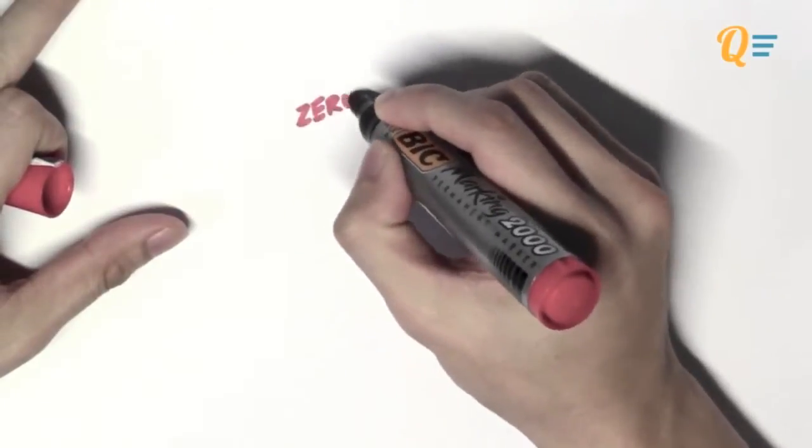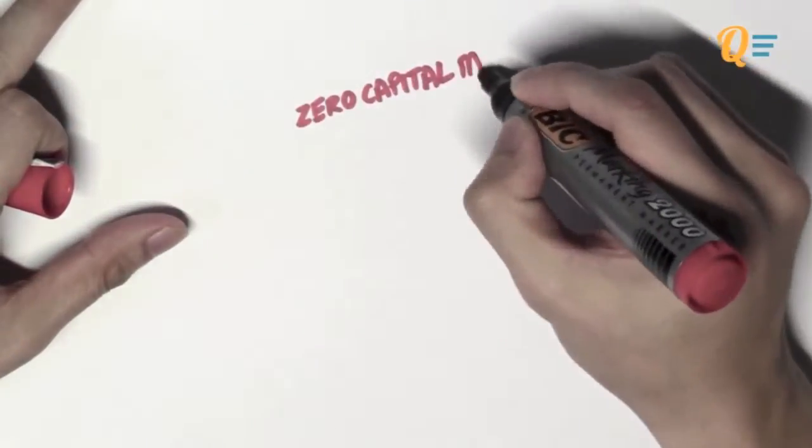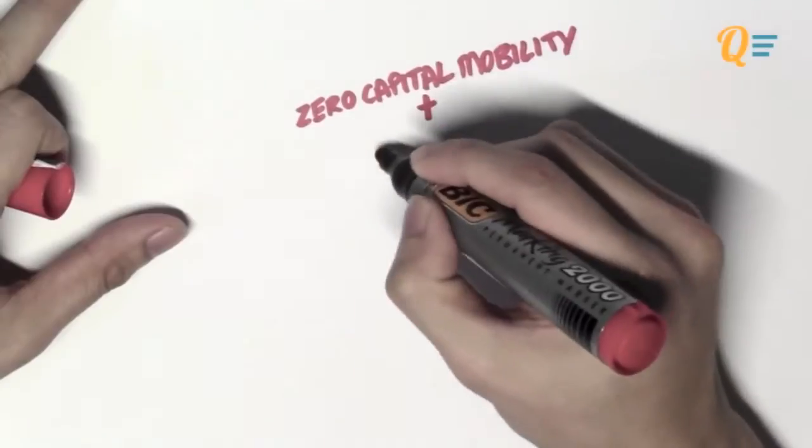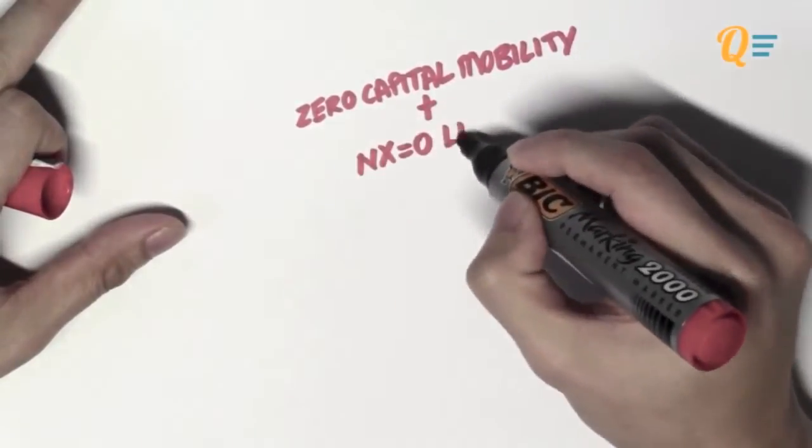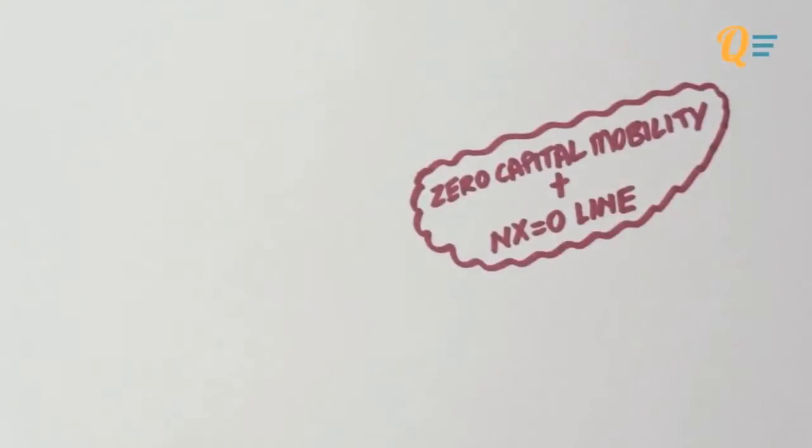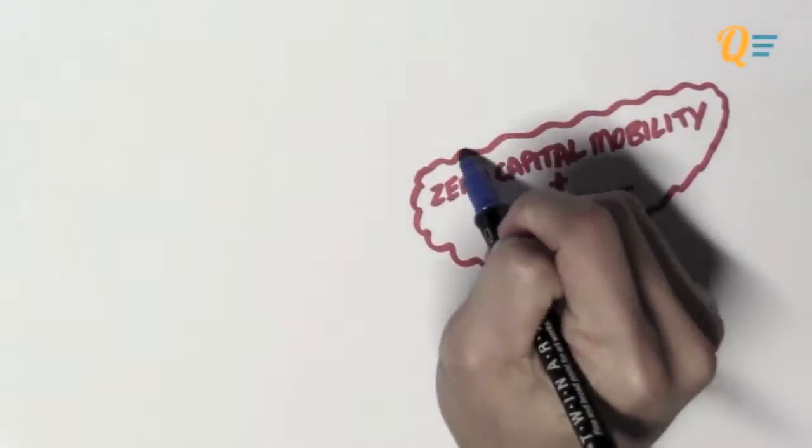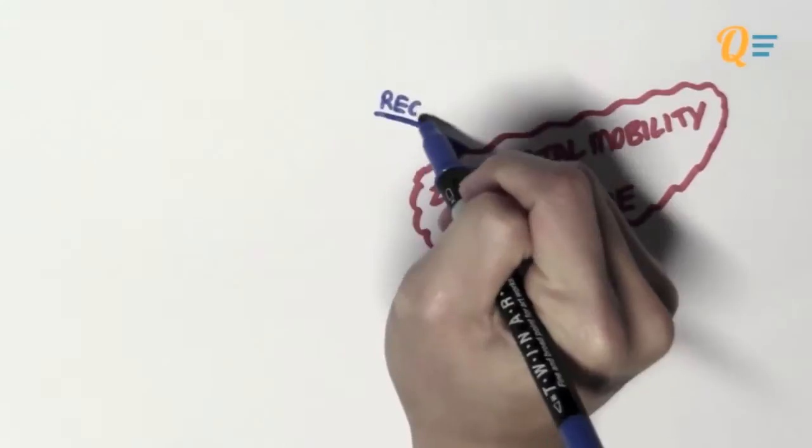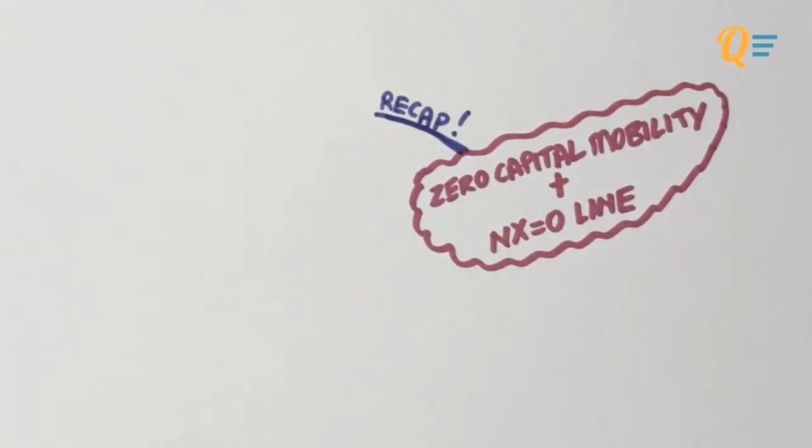Okay, so this is the second video of the open economy series. If you have not watched the first one, I suggest that you go back and check out the open economy basics because you're going to need quite a lot of stuff from that video in order to do well for this one. So we're going to be learning about zero capital mobility and let's just do a quick recap on what is zero capital mobility.